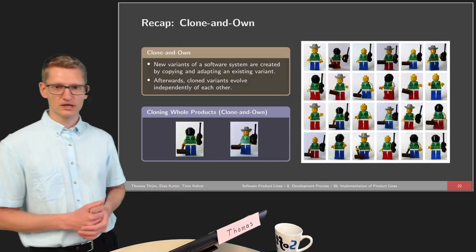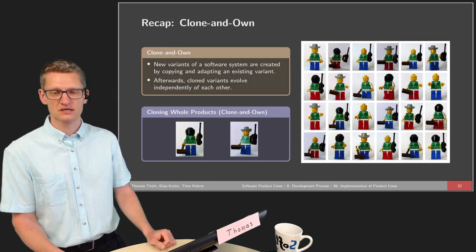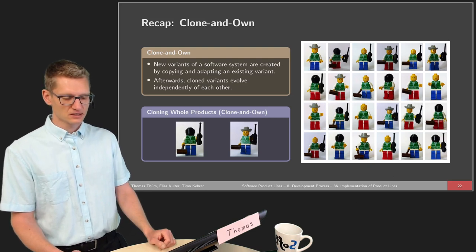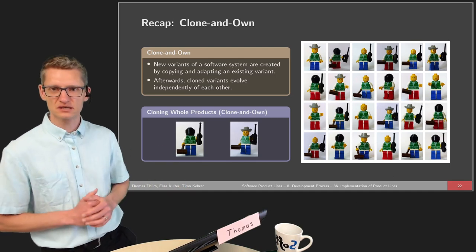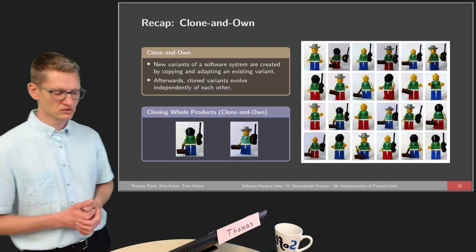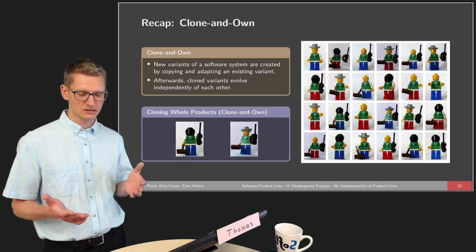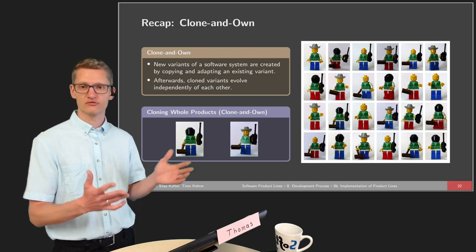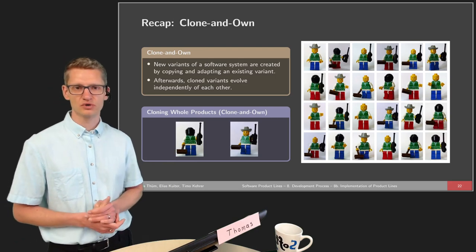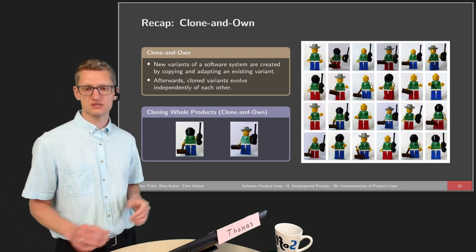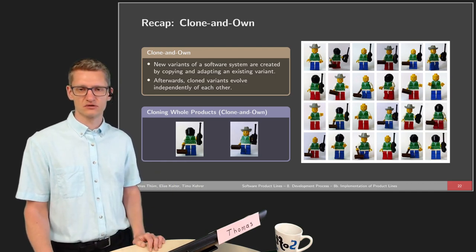Then we looked at clone and own as the second technique, considered as ad-hoc reuse. The idea is that a new variant of a system is created by copying an existing and similar system and adapting it to the needs of a particular new customer. Afterwards, these clone variants evolve independently of each other. While this might work well with only two products, it is a matter of scale — this technique is not well suited for hundreds or thousands of products.